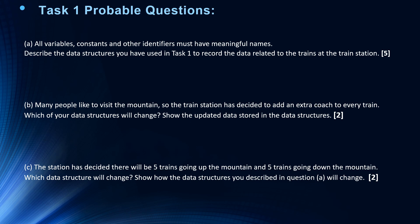You might have a question like A, where it says all variables, constants, and other identifiers must have meaningful names. So that gives you a hint of how to answer. Here's the question: describe the data structures you have used in task 1 to record the data related to the trains at the train station. It might be a 5 mark, 4 mark, or 6 mark question.